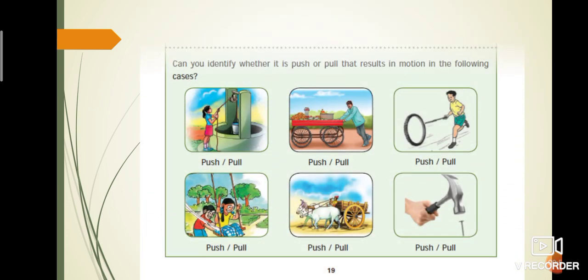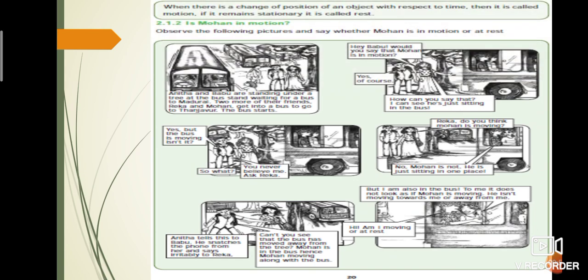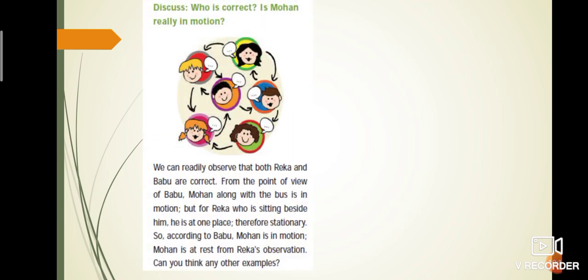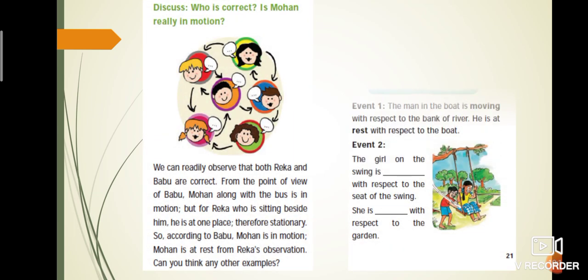On the 19th page, they have given the first activity. You have to find whether it is push or pull. Page number 20 gives a conversation. Three characters are involved. Once you read, you will get the idea for motion and rest.